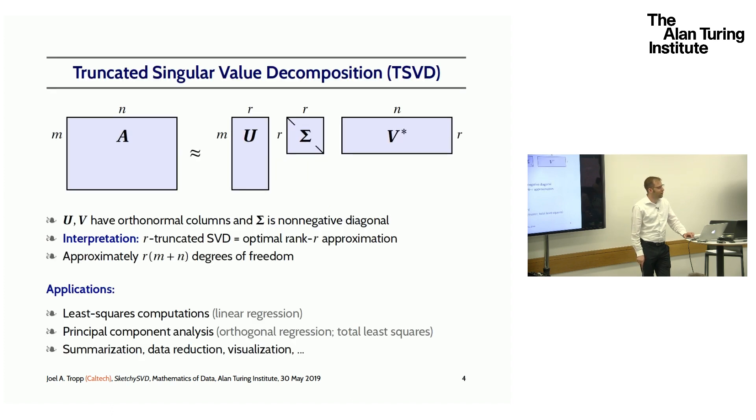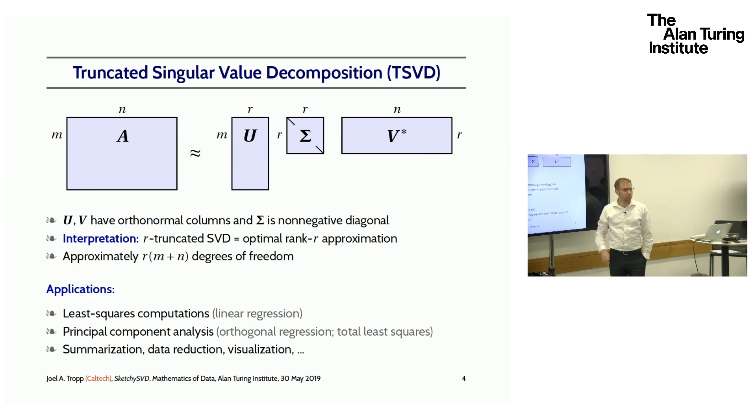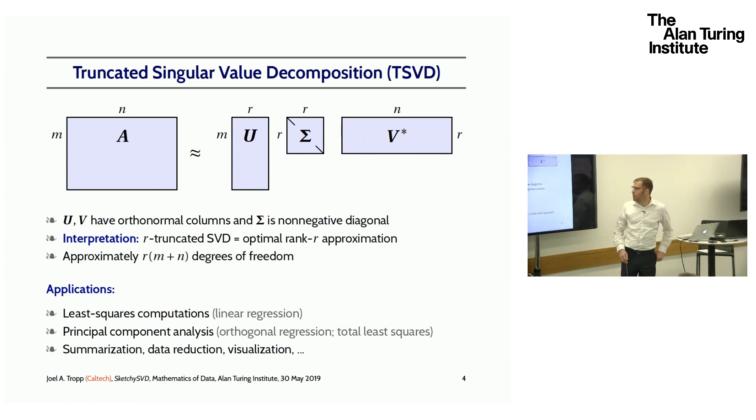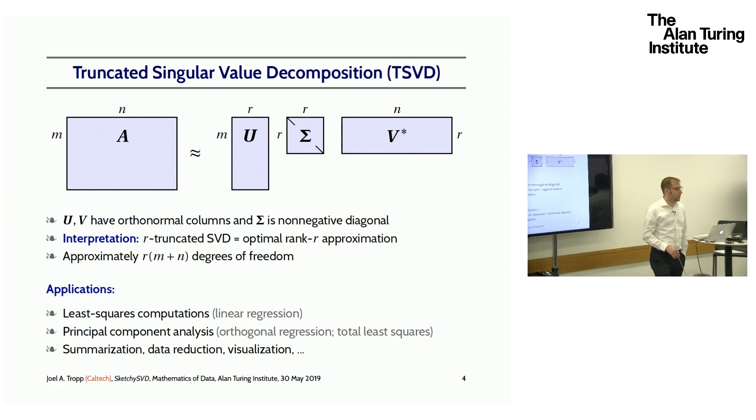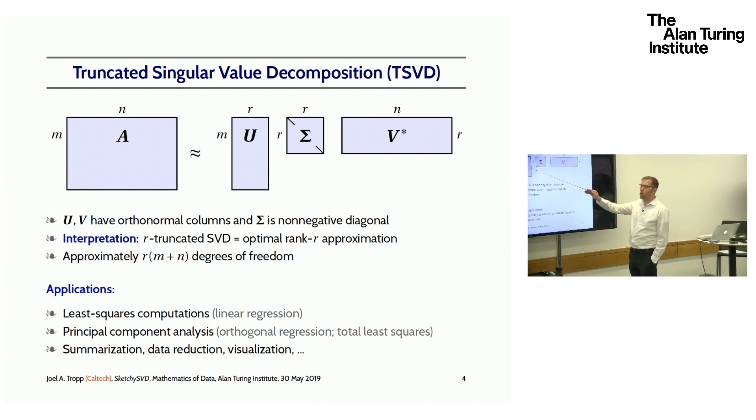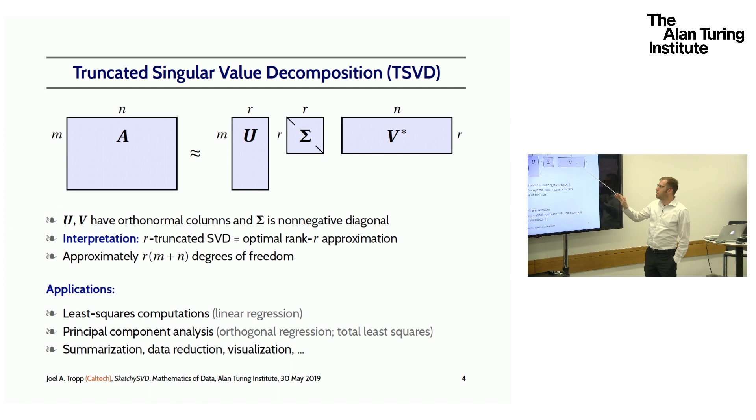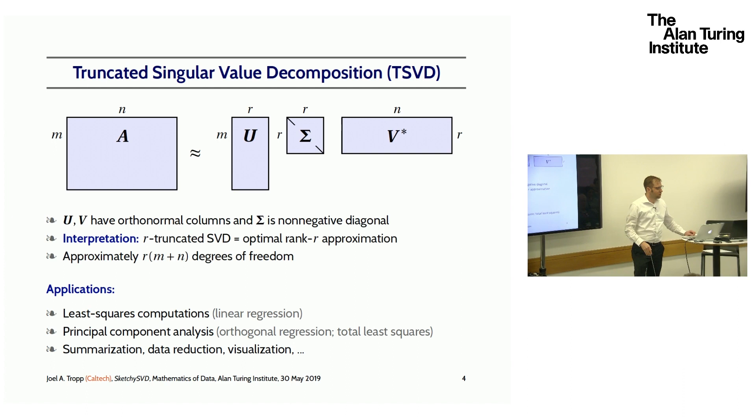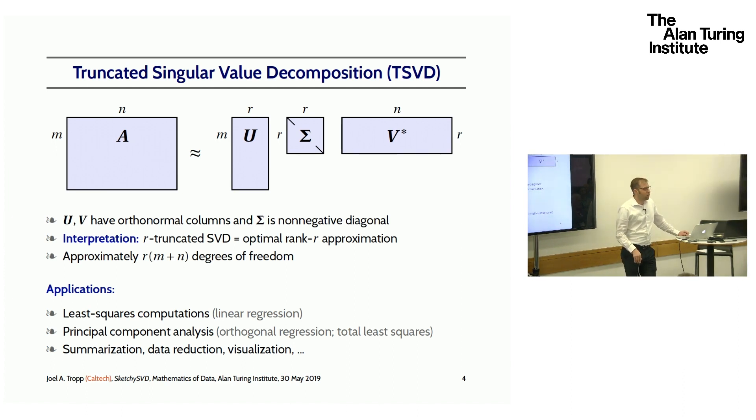Just a quick reminder about the royal emperor of matrix decompositions, the truncated singular value decomposition. We're interested in a large matrix A, which has dimensions M by N, and the truncated singular value decomposition is an approximation of the matrix A that's written as a product of three matrices: a tall matrix U with orthonormal columns, a tall matrix V with orthonormal columns, so this is its conjugate transpose, and a diagonal matrix sigma with non-negative entries.